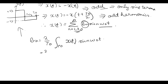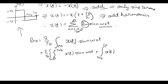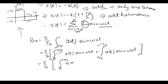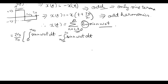This can be written as 2 upon T0 from 0 to T0 by 2 of x(t) sin(nω₀t) dt, plus from T0 by 2 to T0 of x(t) sin(nω₀t) dt. In the first interval x(t) is plus Vs and in the second interval x(t) is minus Vs. Taking Vs common and integrating gives the result.